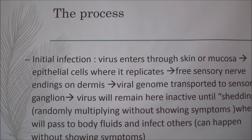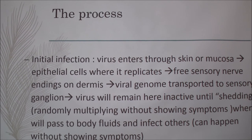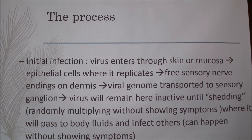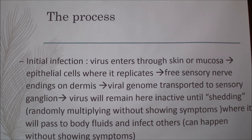The process of how the virus gets in and starts the infection: oral herpes is just like cold sores — I'm sure a lot of you have had a cold sore before. The virus enters through the skin or the mucosa, goes to the epithelial cells and replicates. Then it goes to the free sensory nerve endings on the dermis, and the viral genome is transferred to sensory ganglia. The virus remains there inactive, and when it starts shedding it begins replicating again. You don't have to see symptoms — you can have this showing zero symptoms — and it can be passed on through saliva or other body fluids to affect other people.